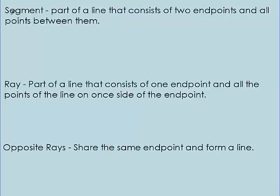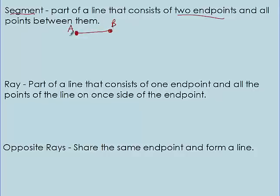More vocabulary — segment. A segment is a part of a line that consists of two endpoints and all points between them. You know how a line has arrowheads and keeps going forever? Well, a segment has ends. We draw point A, then a line that ends right at point B — this is a segment. There are two points that stop; it doesn't go on forever. Since A and B are my two endpoints, I can call this segment AB with a bar on top — notice this bar does not have arrowheads, it's just a bar. You could also call it segment BA.